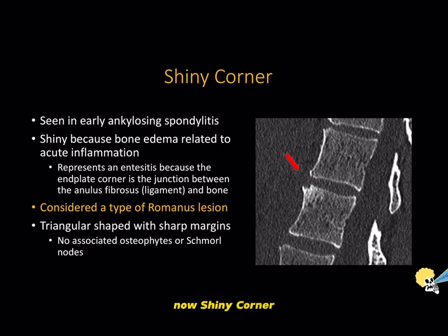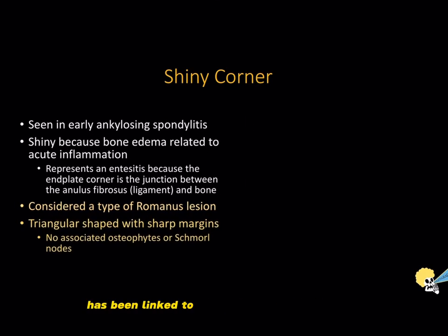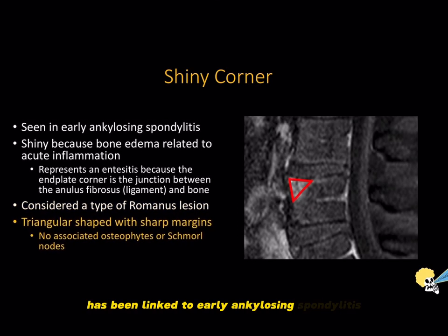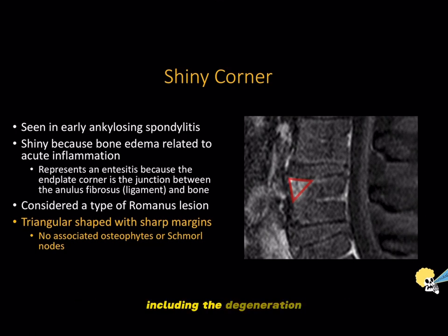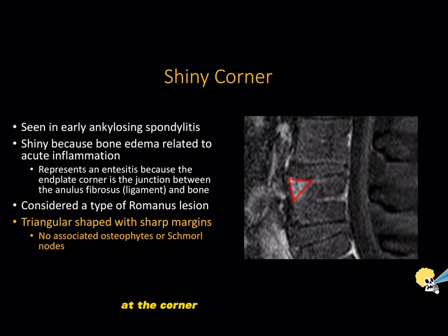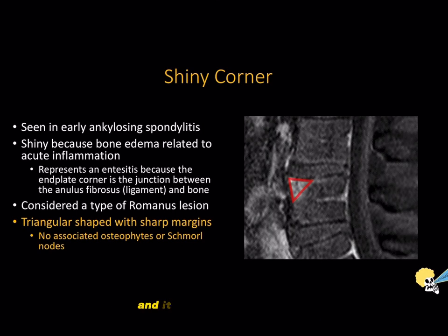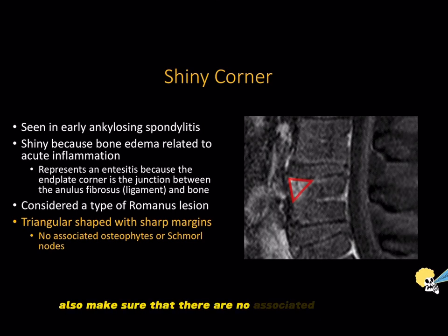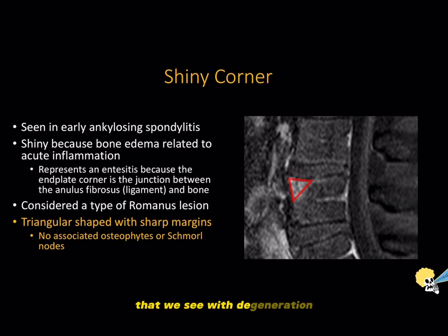The shiny corner sign has been linked to early ankylosing spondylitis, but similar findings can be seen in other conditions including degeneration. To be more specific, if you see focal edema at the corner of the vertebral body, make sure it is triangular shaped and not semicircular, and that it has very sharp margins. Also make sure there are no associated osteophytes or Schmorl's nodes that we see with degeneration.